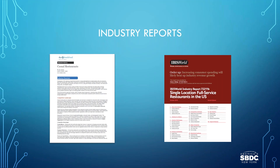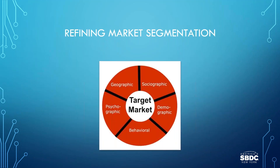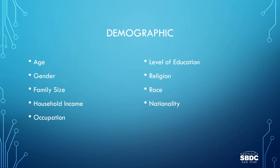Industry reports alone won't help you identify and reach your target market. First, you have to understand that the target market can be segmented into several parts. Finding your target market in an age of information overload is less complicated when you approach your potential market in segments. Refining your target market via market segmentation will also allow you to better match your products or services' benefits to your customers' needs. The five segments are: demographic, behavioral, psychographic, geographic, and sociographic.